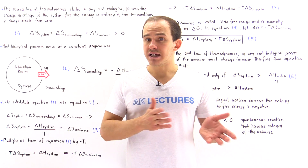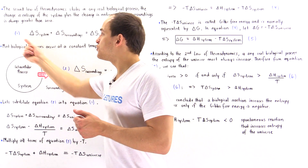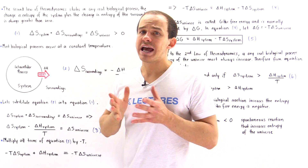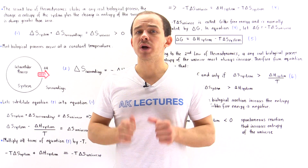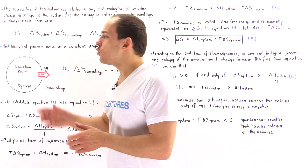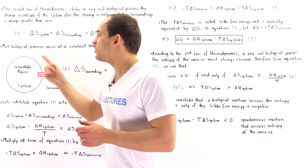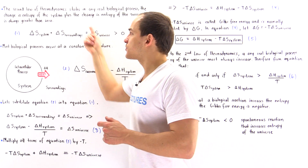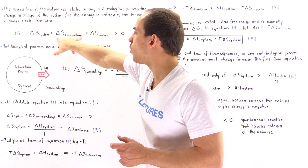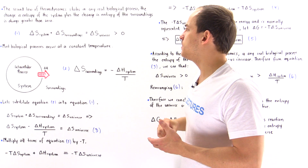We can also describe the second law of thermodynamics using a mathematical equation. The change in entropy of the system plus the change in entropy of the surroundings is equal to the change in entropy of the universe, and that must always be greater than zero. We can still have a decrease in the entropy of the system as long as the increase in the entropy of the surroundings is greater than the decrease in the entropy of the system.